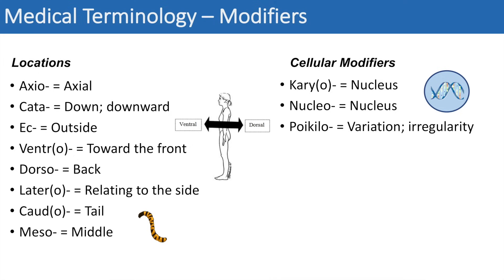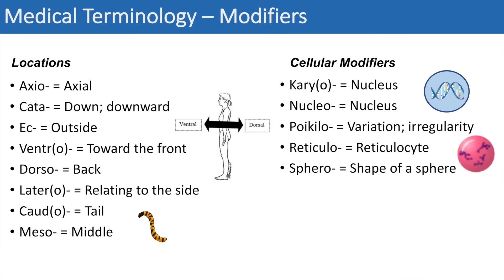The next one is poikilo, which means variation or irregularity. In zoology you can think of poikilotherms, and with regards to cells, you can think of poikilocytes — cells that have varying shapes. The next one is reticulo, which can refer to reticulocyte, an immature red blood cell. Another cellular modifier is the prefix sphero, which refers to the shape of a sphere — there are cells known as spherocytes, meaning they have the shape of a sphere.